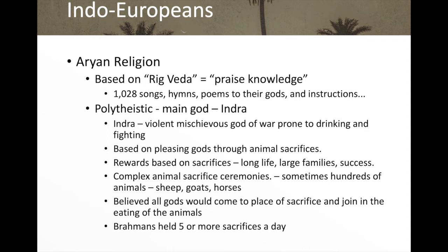They had complex animal sacrifice ceremonies where sometimes hundreds of animals — sheep, goats, and horses — would be sacrificed to appease the gods. They believed all gods would come to the place of the sacrifice and join in eating the animals. The Brahmins, who were the upper class in the caste system, would hold five or more sacrifices a day.